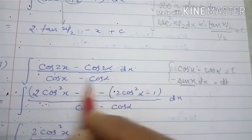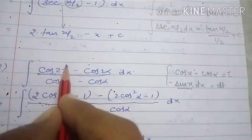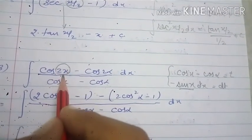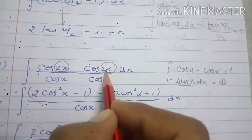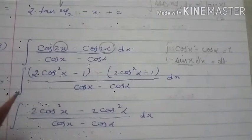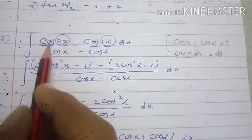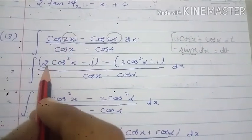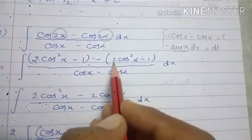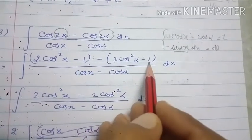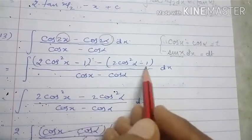To cancel the denominator, we need to convert cos2x to half angle form. The trigonometric identity for cos2x is 2cos²x - 1. So cos2x becomes 2cos²x - 1, and similarly cos2α becomes 2cos²α - 1. Using these in the numerator, the -1 and +1 cancel each other.